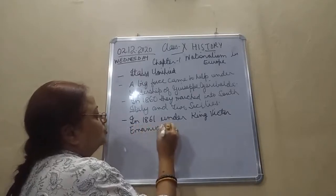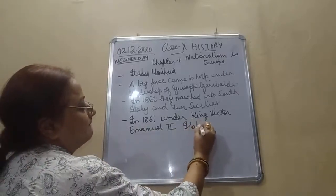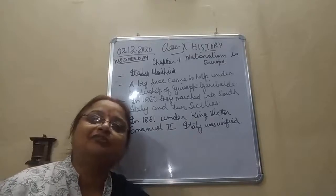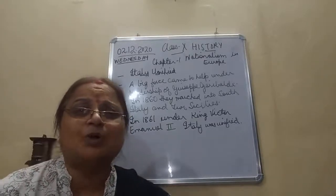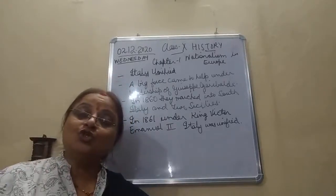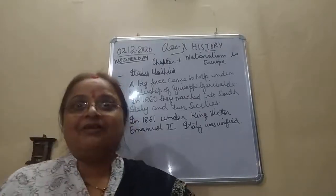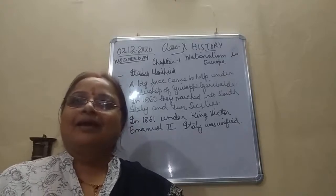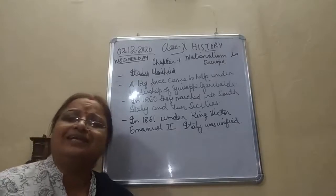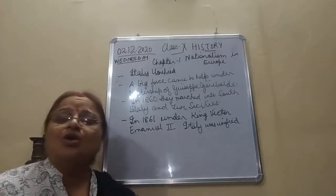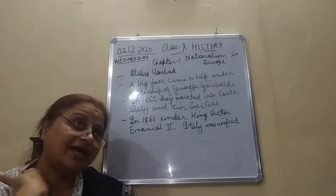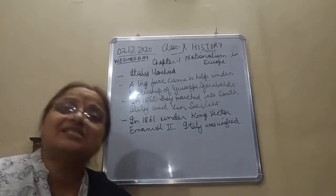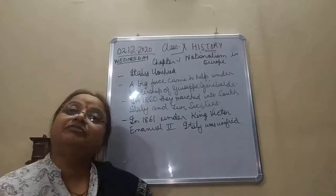Victor Emmanuel II was proclaimed King of unified Italy. However, the local peasants were totally unaware of all these things — they did not know what was going on, why the war was happening, or what unification meant. Illiteracy was very high and they were unaware of liberal nationalist ideology.